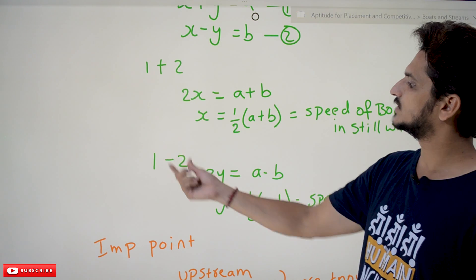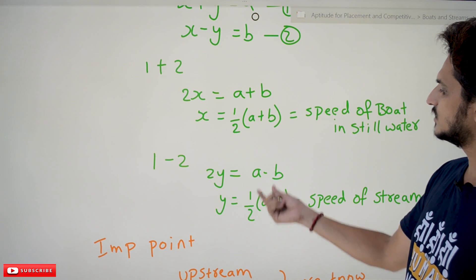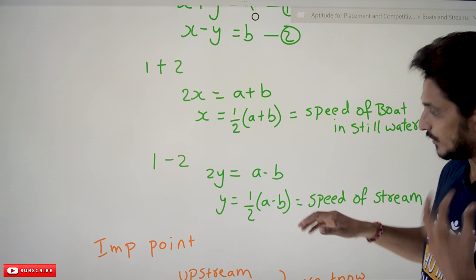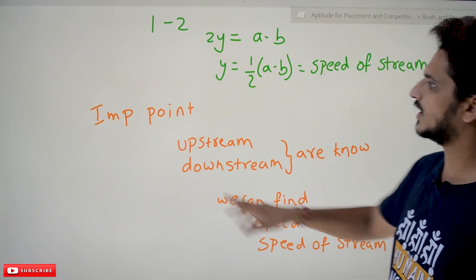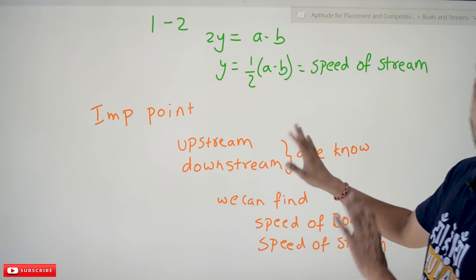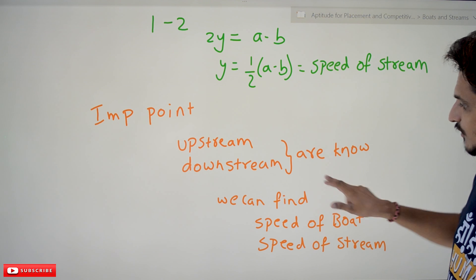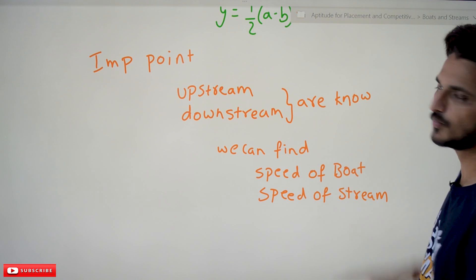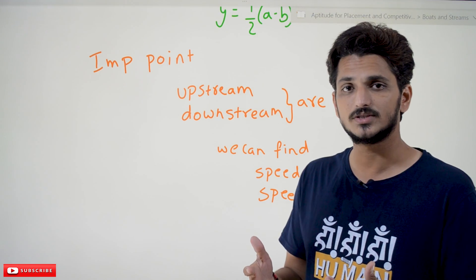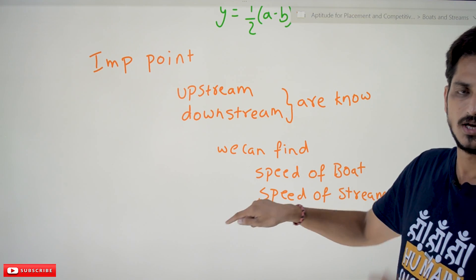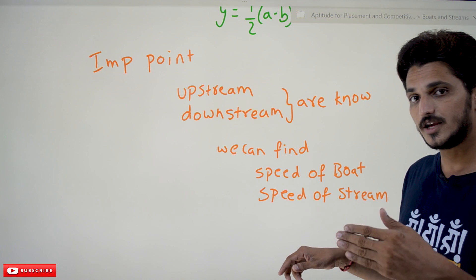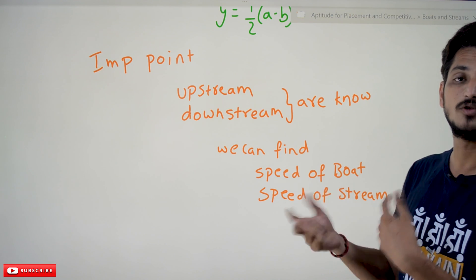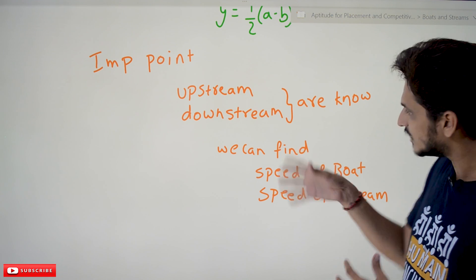If you subtract the two equations — equation one minus equation two — you get 2y equals a minus b, so y equals half of (a minus b). This y is the speed of the stream. The important point to understand is: when upstream and downstream speeds are given, you can find the speed of the boat and the speed of the stream. Almost all problems revolve around these concepts — they may give you upstream and downstream and ask for boat speed, or give boat speed and ask for downstream speed.